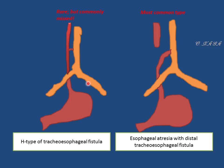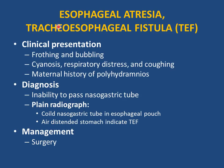Clinical presentation of esophageal atresia includes frothing, bubbling, cyanosis, respiratory distress, and coughing. Maternal history of polyhydramnios is important. Diagnosis is confirmed by inability to pass the nasogastric tube. Plain radiograph will show a coiled nasogastric tube in the esophageal pouch; an air-distended stomach indicates tracheoesophageal fistula. Management is surgical.